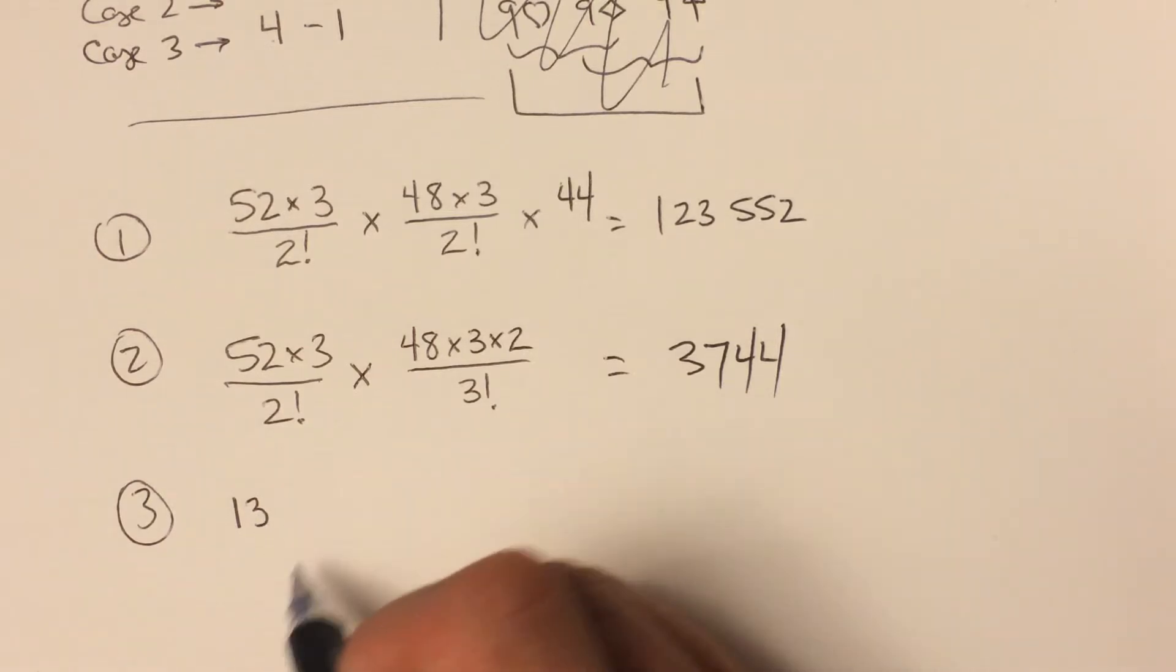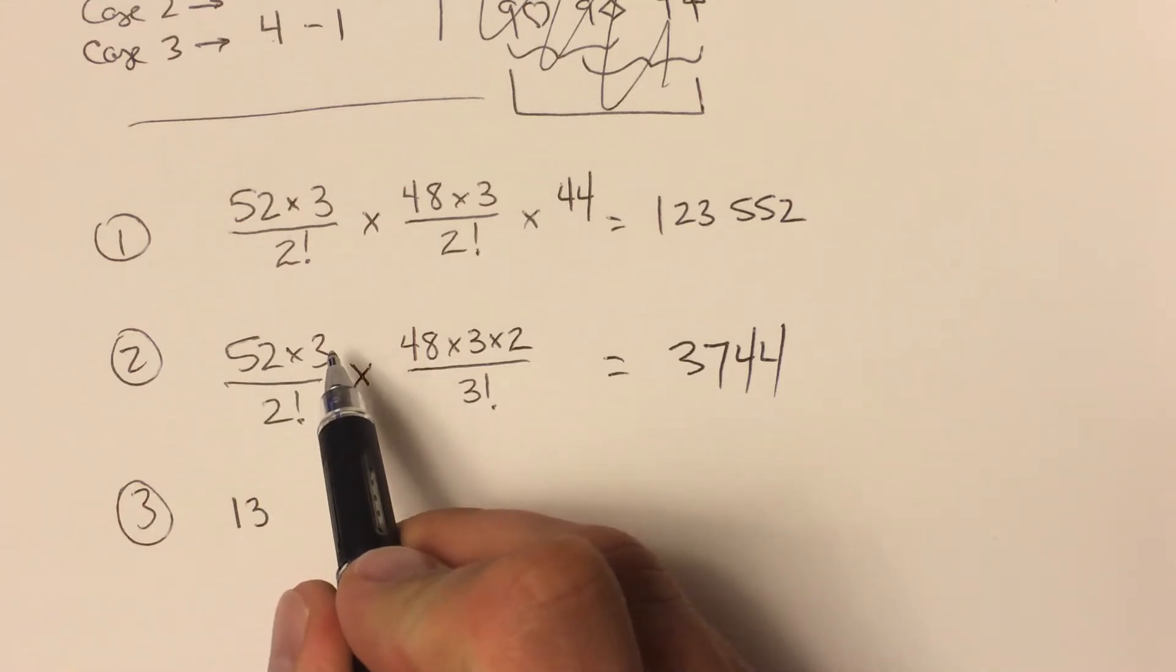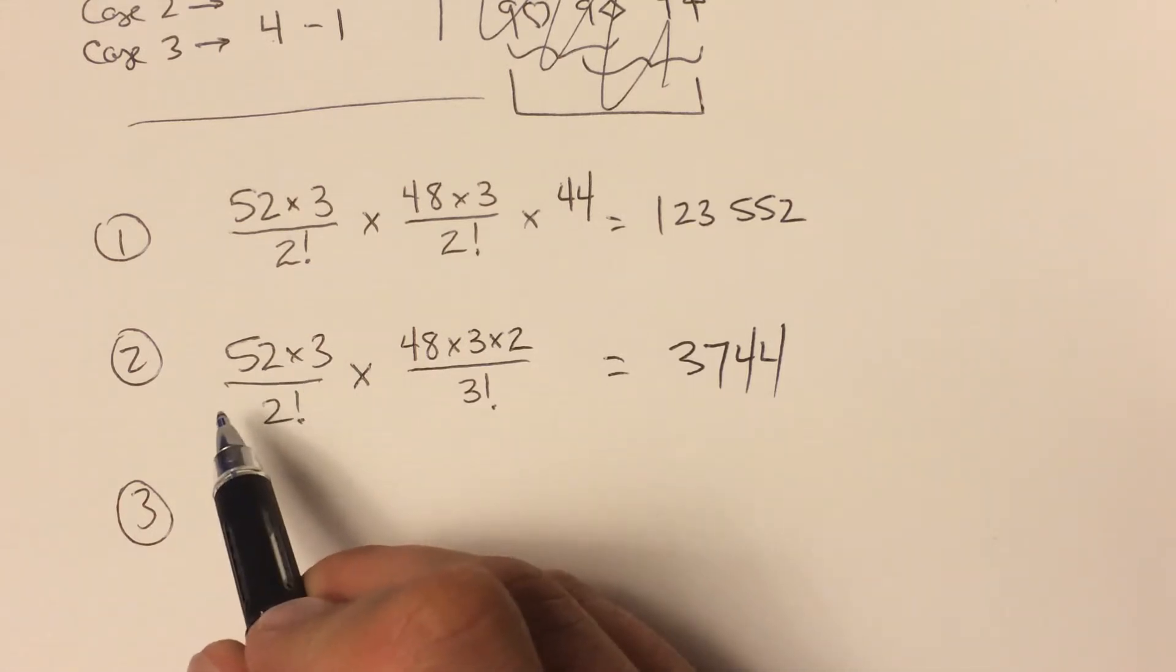We're going to take all of the sevens, so there aren't ways to arrange and select—sorry, there aren't ways to arrange the sevens. If we were to try to arrange them like 52 times 3 times 2 times 1, we would then be dividing by four factorial.